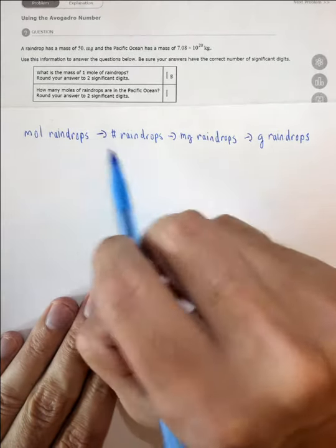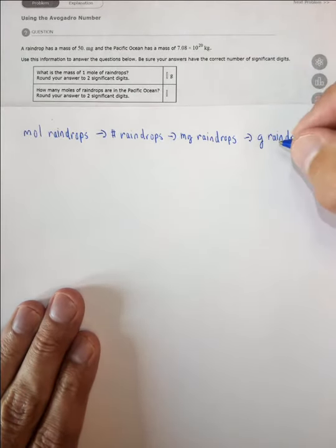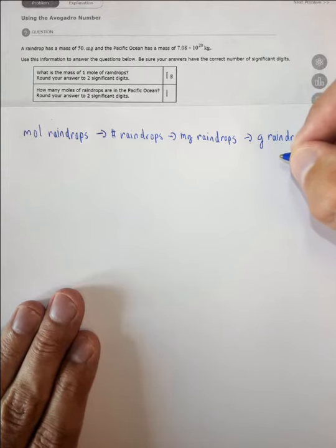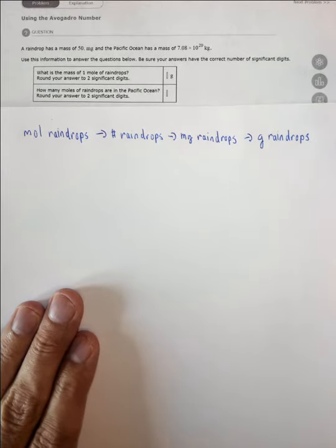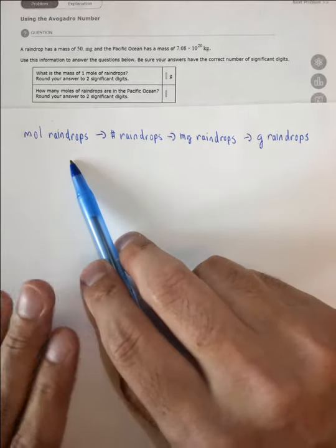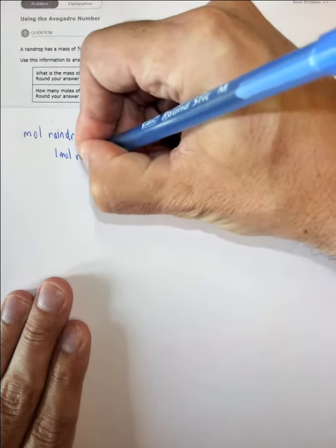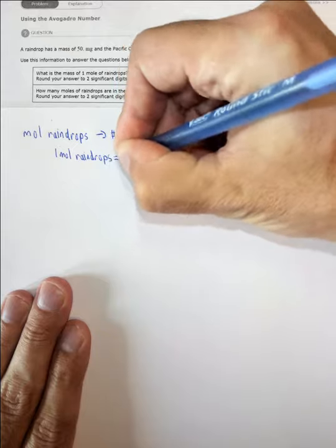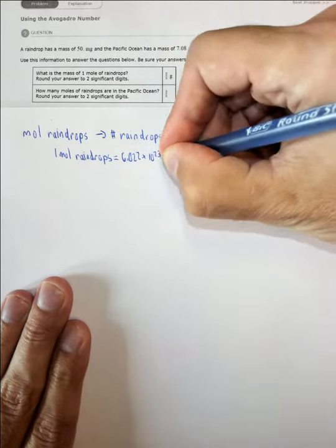First we need to convert moles of raindrops to number of raindrops. We know Avogadro's number — it's like a dozen. You can have a dozen eggs or a dozen donuts; you can have 12 of any of them. Moles are the same: you can have 6.022 times 10 to the 23 of anything. We usually use it with atoms and molecules, but in this case we're going to use it for raindrops. So one mole of raindrops equals 6.022 times 10 to the 23 raindrops.